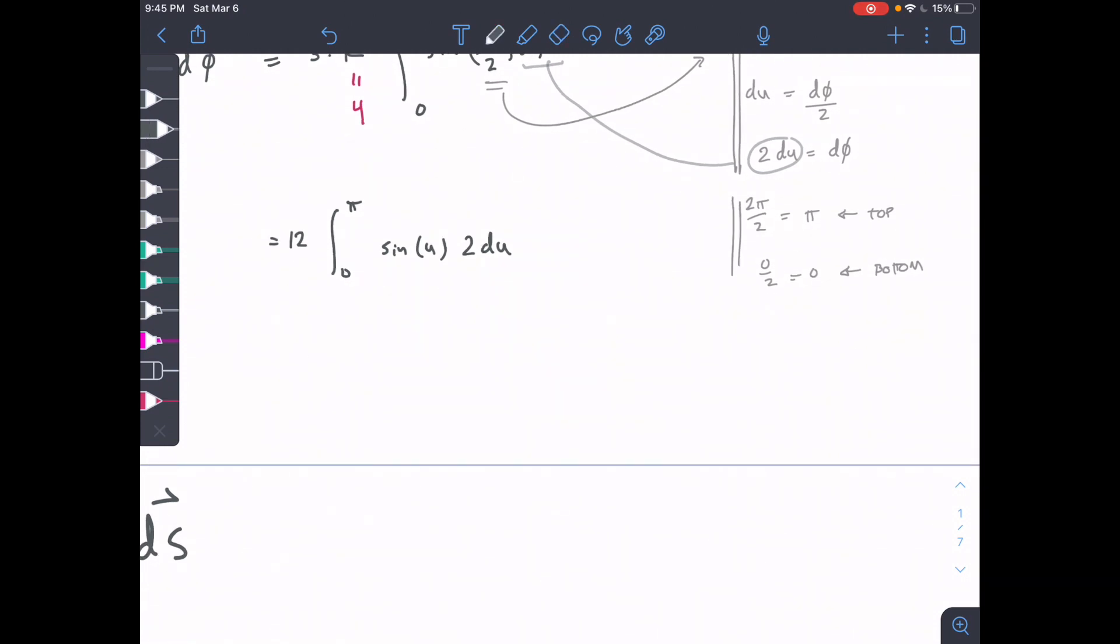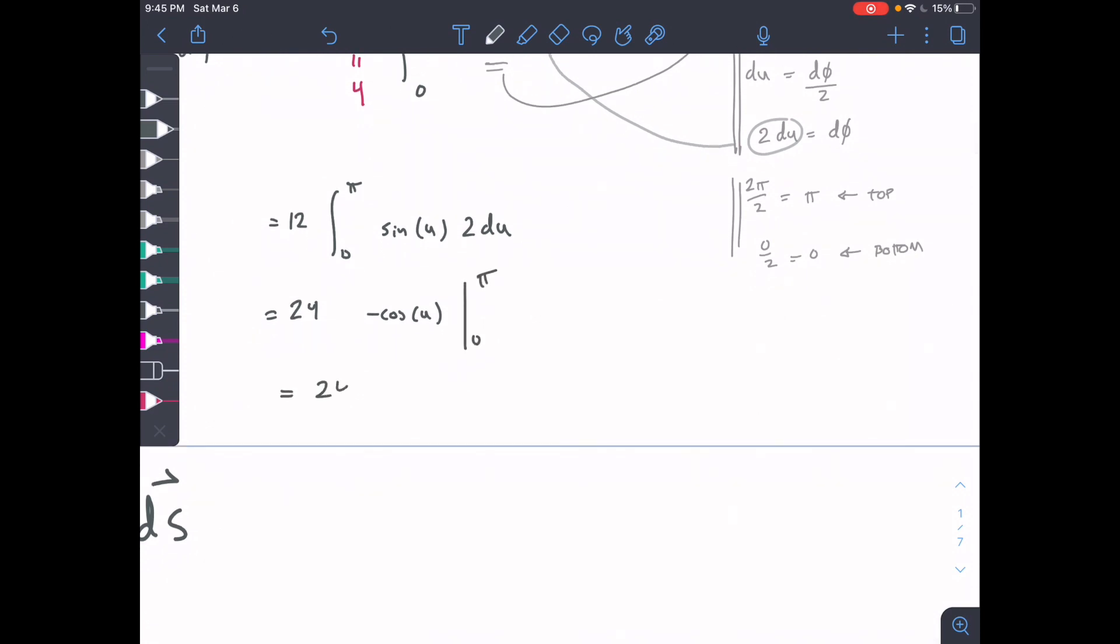Let's go ahead and integrate this. So 24 on the outside, and then I'm going to end up with negative cosine, because the integral of negative cosine would be sine. Negative cosine of u from 0 to pi. That's going to equal negative cosine of pi minus a negative cosine of 0.